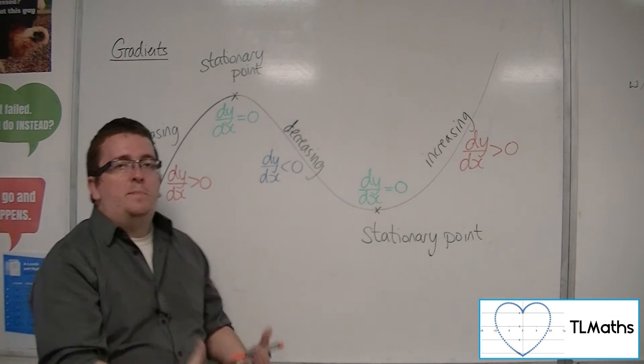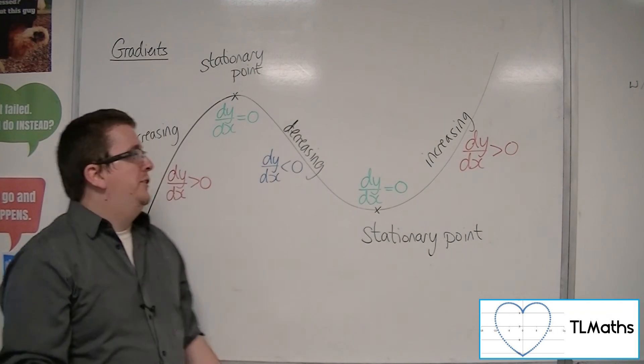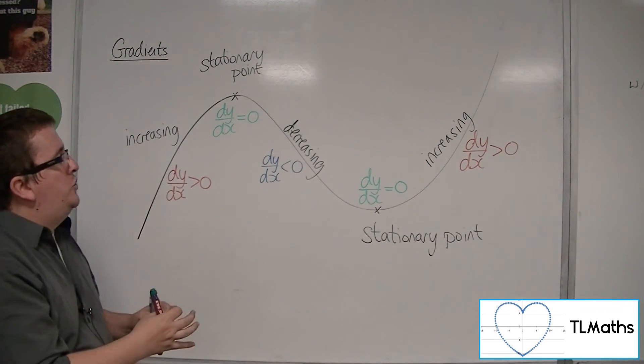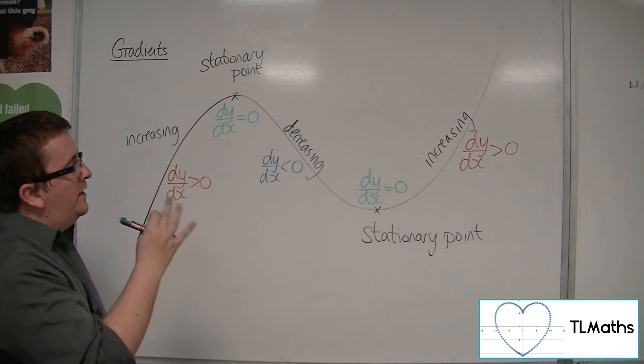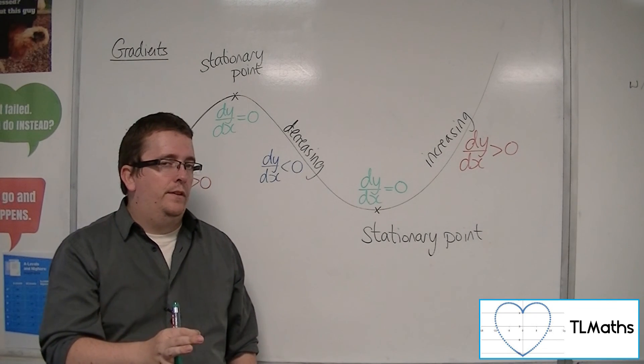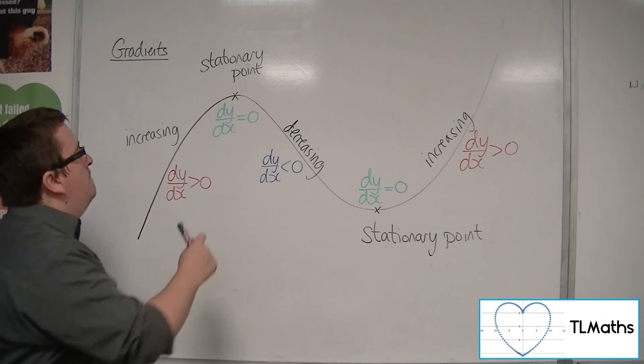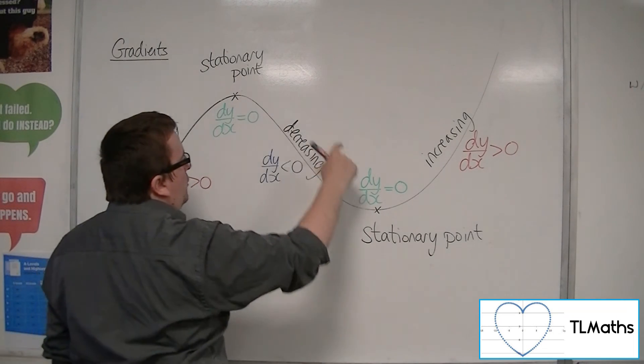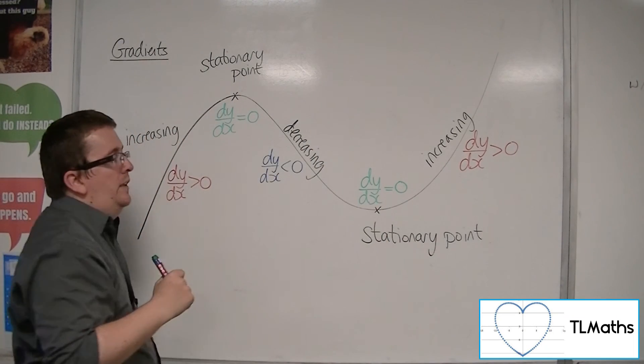So that is going to be incredibly important for us, to find those stationary points, to find where the curve is changing direction, effectively. So where the curve's gradient is 0.